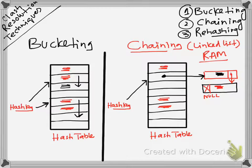In case it is happening for the very first time, the whole procedure is done. When it tries to read, it reaches the location in the hash table and sees that instead of a record, there is a pointer there. So it starts following that pointer out into the free RAM. This is called chaining.